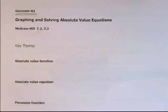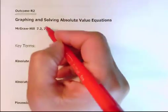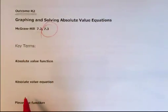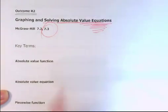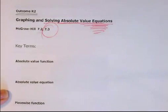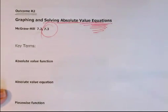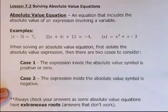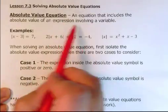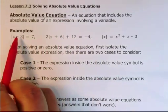Alright, so I'm going to continue with outcome R2, and this time we're looking at 7.3 - solving absolute value equations. If you remember what an equation was, it has an equal sign in it, and we're going to be looking at something that looks like this: you're going to have the absolute value stuff here and the regular stuff here.